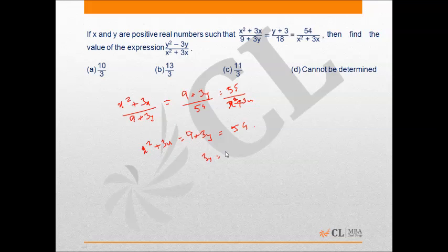Thus from here we can say x square plus 3x is equal to 9 plus 3y is equal to 54. Now 9 plus 3y is 54, so 3y is 45 and y is 15. X square plus 3x is 54, that is what we need. We need to find the value of y squared minus 3y upon x square plus 3x.